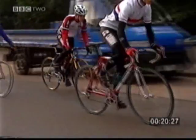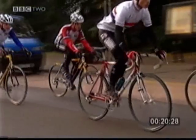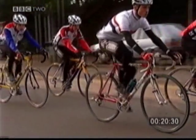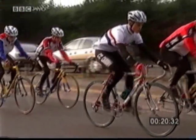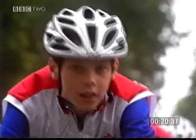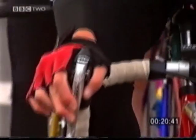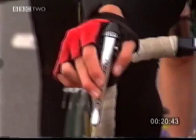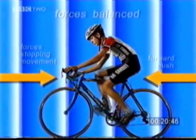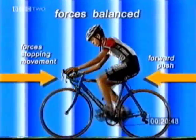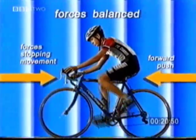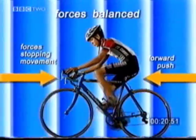Here on Earth, forces act against or change movement all the time. But in theory, once a force has started an object moving, the object will continue to move in a straight line at a constant speed unless another force acts on it. This means that while an object, like a bike, is moving at a constant speed — neither speeding up nor slowing down — the forces acting on it are balanced.